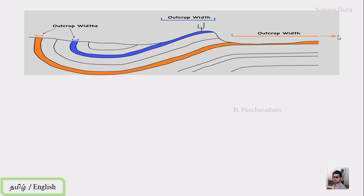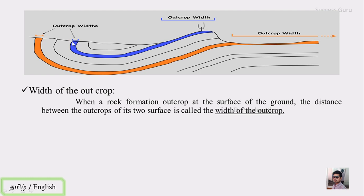So first, outcrop. This is a folded rock where the surface is exposed. The width of the outcrop — on level ground, the rock would dip upward. On uneven ground, the width of the outcrop is controlled by the dip and the ground slope. Definition: when a rock formation outcrops at the surface of the ground, the distance between the outcrop of its two surfaces is called the width of the outcrop.